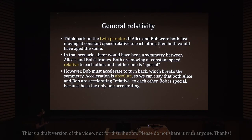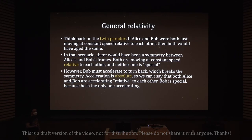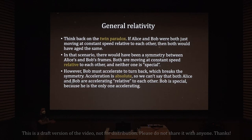What actually happens is that Bob must accelerate to turn back, which breaks the symmetry. Acceleration is absolute — we can't say both Alice and Bob are accelerating relative to each other. Bob is special because he is the only one accelerating. I can say Alice is at rest and Bob is moving, or vice versa, as long as neither is accelerating. But if one of them is accelerating, then Bob is accelerating and Alice is not — there's no other way to describe it. Acceleration is not relative; you can either accelerate or not accelerate.